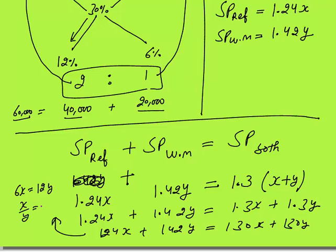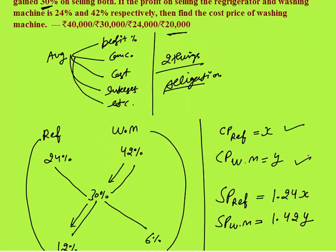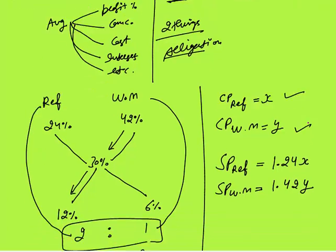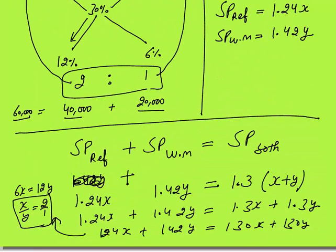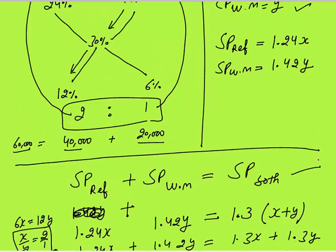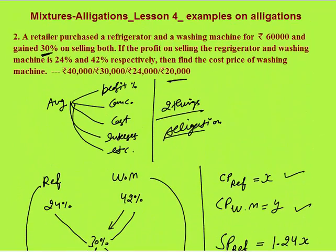So x by y is 2 is to 1 — the cost of the refrigerator to washing machine is in ratio 2 is to 1. Your answer is again 20,000. You can see it may take one to one-and-a-half minutes with the equation method, but with allegation it is comparatively easier. The objective was to show that wherever an average of two things — average profit percent, average concentration — is given, you can apply allegation.